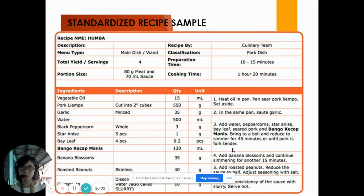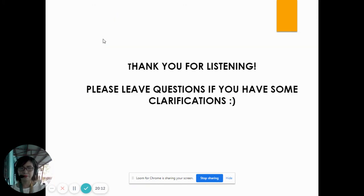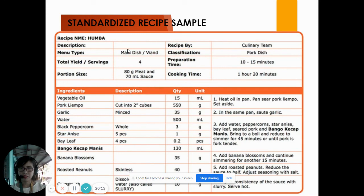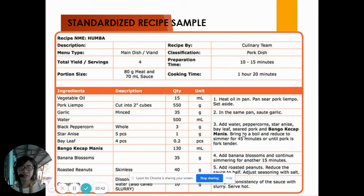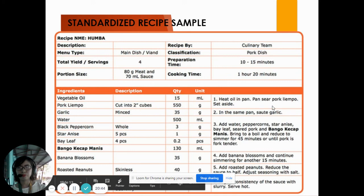So this is the sample standardized recipe. The recipe name is Humba. You can state if it's a main dish or side dish. Include classification, preparation time, cooking time, portion size, yield, ingredients with description, quantity, the unit, and of course the set of instructions or procedure or directions.